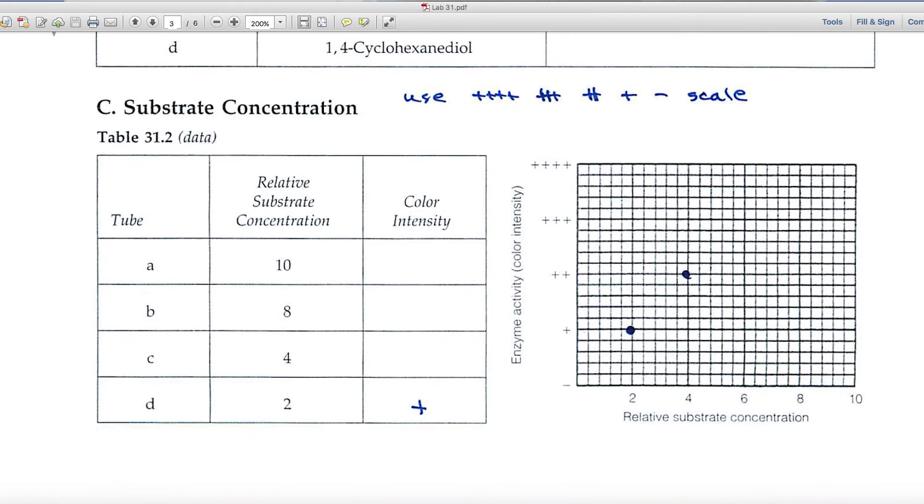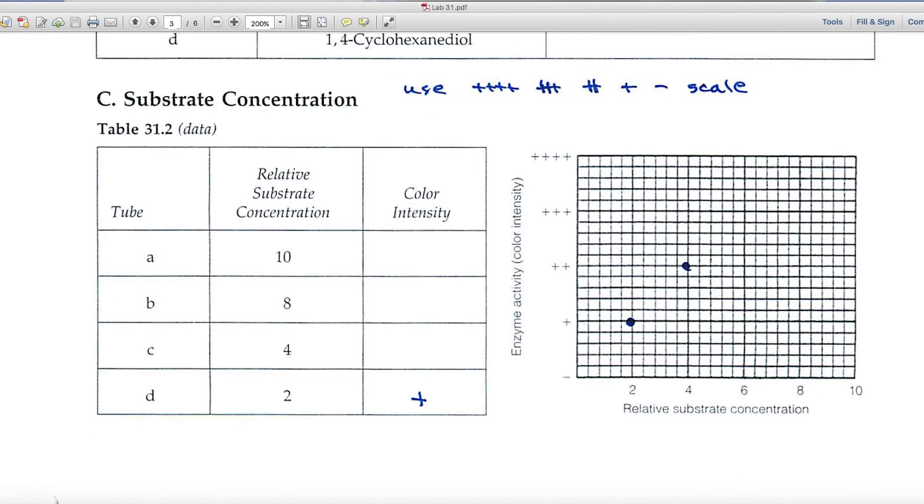In part C, you're looking at substrate concentration. Here on the left side is where you'll record your data. The color intensity, again, using the same scale of plus, plus, plus and so on.